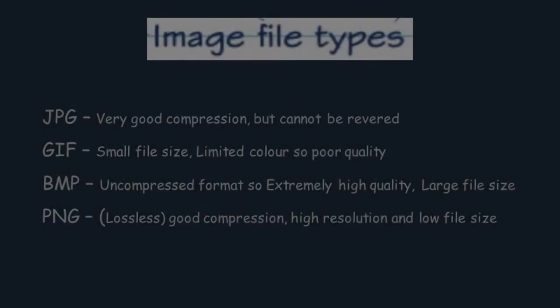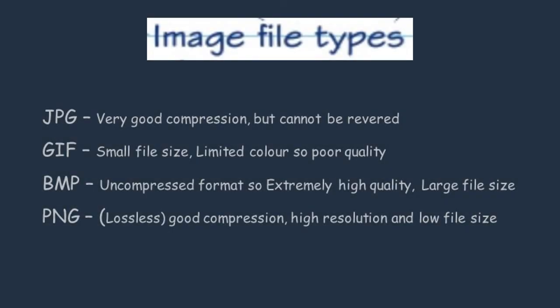There are different types of files that a person might use for images. JPG, used for JPEGs, has very good compression, but the problem is the compression cannot be reversed. GIFs are good because they have a small file size, so they won't take a lot of storage on your computer, but they have a limited amount of colours, so the quality of the image won't be the best.